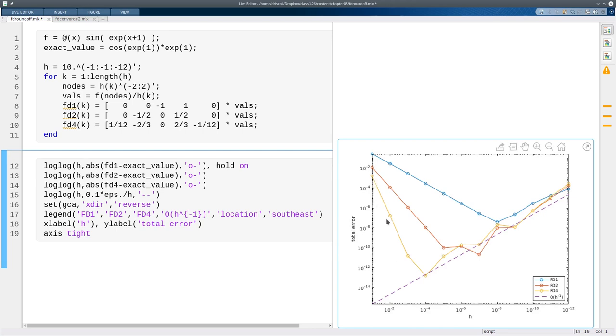And then finally, for the fourth order method, we should be getting down to about epsilon to the one-quarter power. So somewhere around ten to the minus four. And then the error is the fourth power of that. So getting pretty close now to full machine precision.